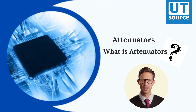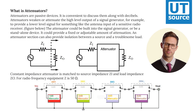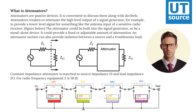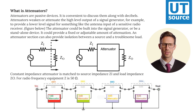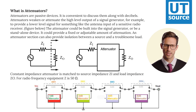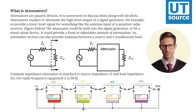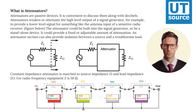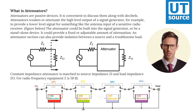Attenuators. What are attenuators? Attenuators are passive devices. It is convenient to discuss them along with decibels. Attenuators weaken or attenuate the high-level output of a signal generator, for example, to provide a lower-level signal for something like the antenna input of a sensitive radio receiver.